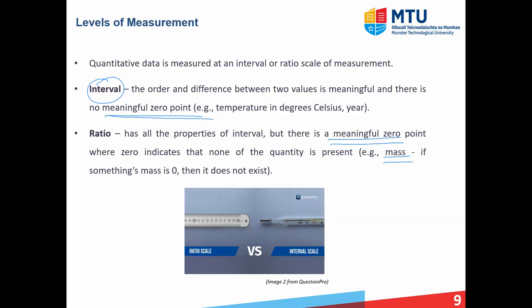Okay. So if we go back up to interval, let's think of some examples where there isn't a meaningful zero. Well, temperature in degrees Celsius, you can talk about the order and difference between two values, but there is not a meaningful zero. Now there is a zero degree Celsius, of course, but when you're at zero degrees Celsius, it represents something and you can go below it, minus one, minus two, and so on. Same with year. Okay. So we're in 2024 AD as I'm recording this, we can go back to zero and then we go into BC. So there isn't a meaningful zero there either.